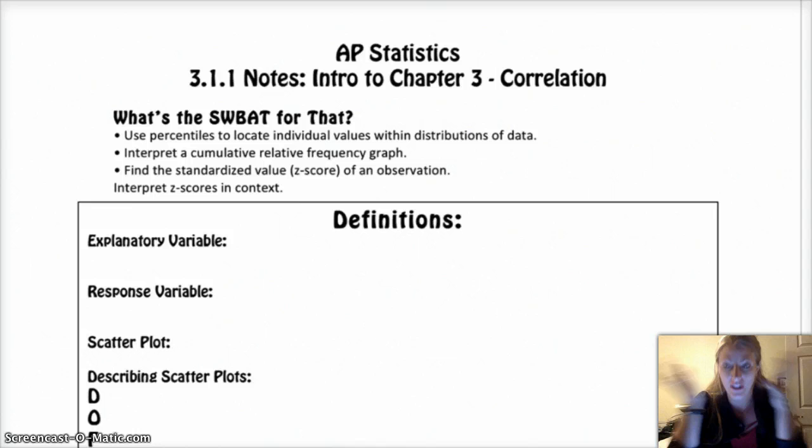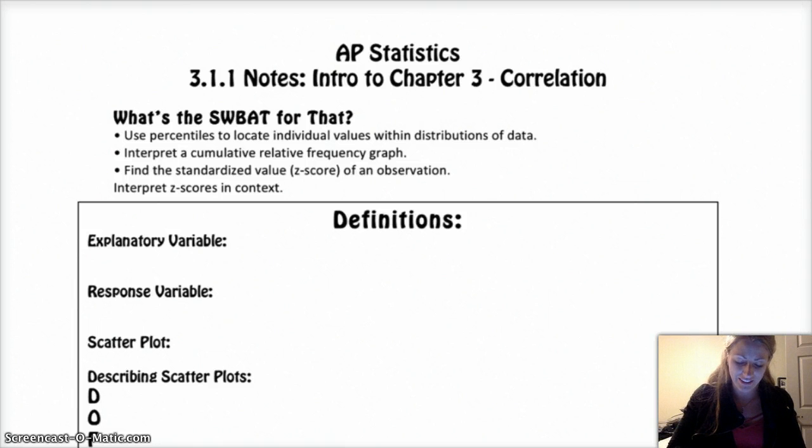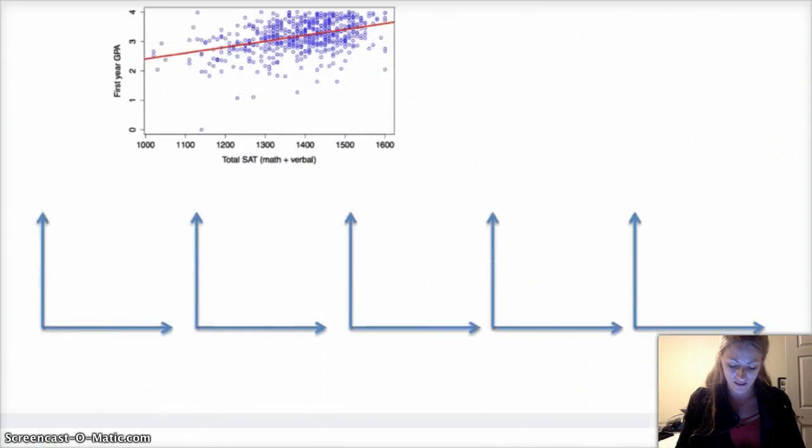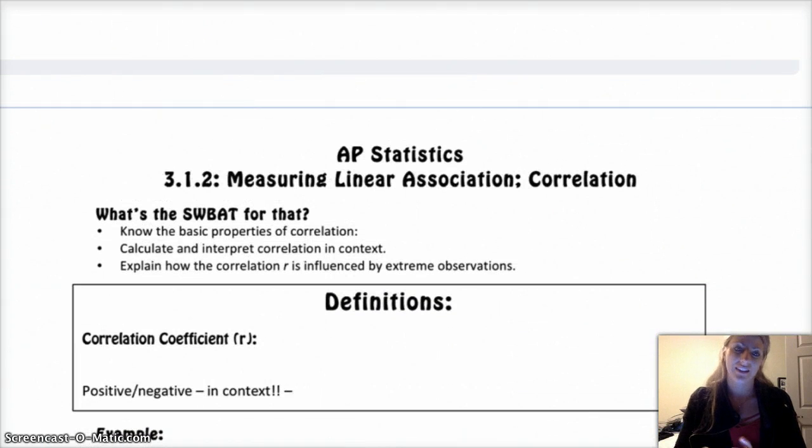If you get through it and your brain just exploded, let me know in class so that I can go over more stuff. But I think that you'll find this not to be too bad. So 3.1 is... our SWBAT. Knowing the basic properties of correlation, calculate and interpret correlation in context, and explain how correlation r is influenced by extreme observations.